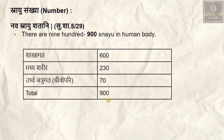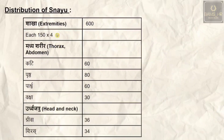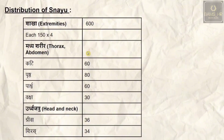Regarding distribution: in each limb there are 150 snayu, and with four limbs that gives 600. For the madhya region there are 230, divided as: kati 60, sthana 80, parshava 60, bakshas 30. For urdhva jatru there are 70, divided as: griva (neck) 36, and shiras (head) 34.